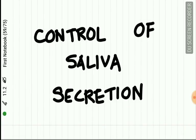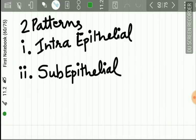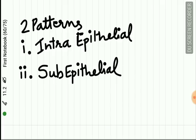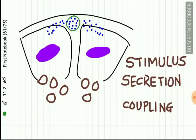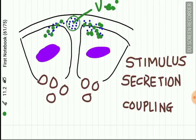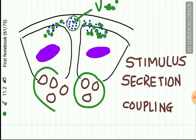Regarding control of saliva secretion: the nerve innervation of salivary glands involves vesicles containing neurotransmitters. These vesicles are released, the neurotransmitters stimulate salivary acinar cells, and the zymogen granules are discharged. This molecular event is called stimulus-secretion coupling.